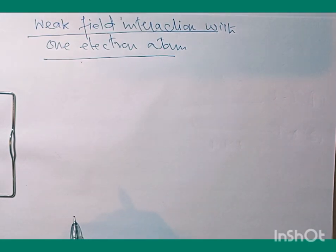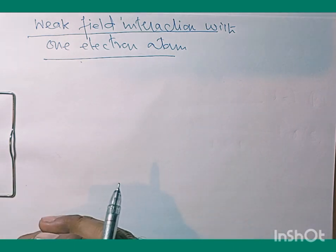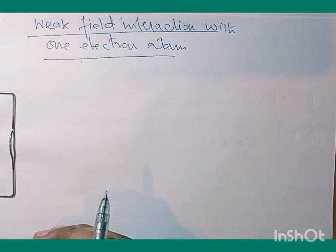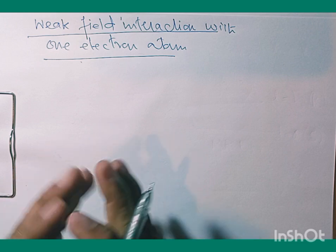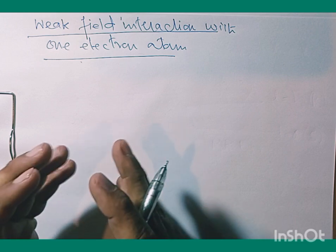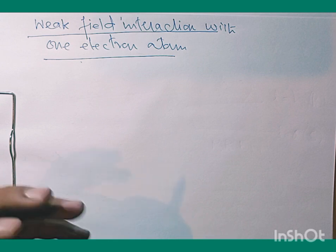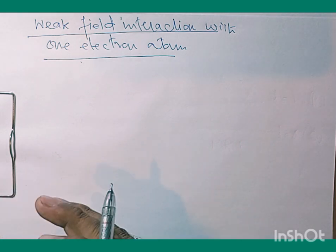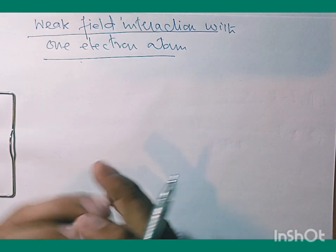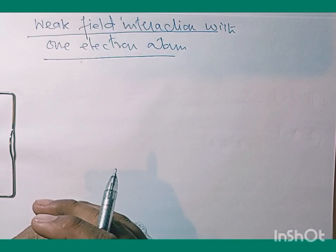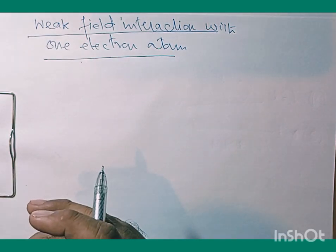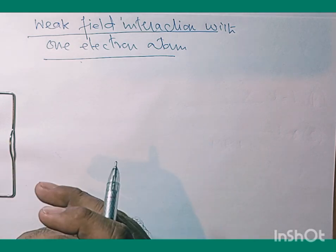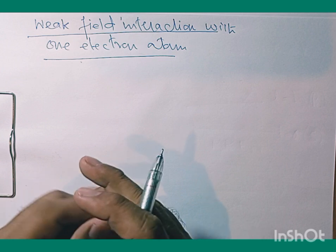Let's talk about the interaction of a magnetic field with one-electron atoms — atoms that have one electron in their valence shell. Within the atom, there is a spontaneous interaction between the spin and orbital motion of the electron, leading to what's called the spin-orbit interaction.